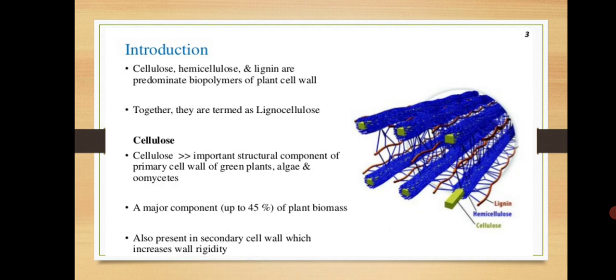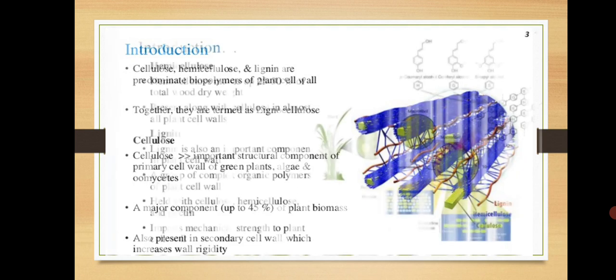Cellulose is found in association with lignin and hemicellulose. Cellulose, hemicellulose, and lignin are the biopolymers of the plant cell wall. These three components together are termed as lignocellulose. It is a major component, contributing about 45% of the plant biomass. Cellulose provides rigidity and support to the plant cell wall.